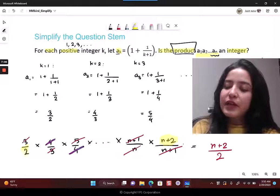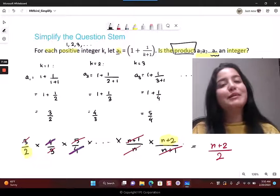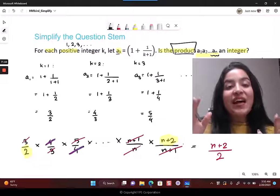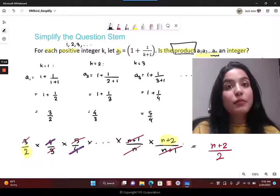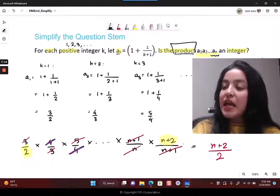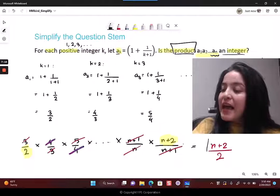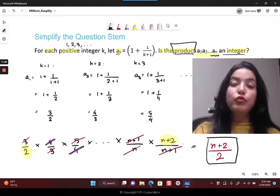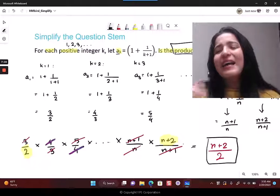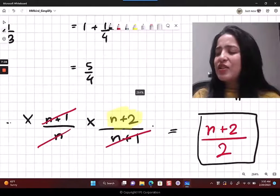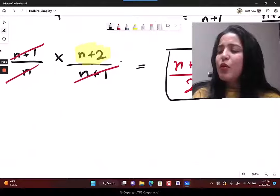This is the n plus 2 that ultimately remains in the numerator, and this is the 2 that ultimately remains in the denominator. Now this is my product. What's the question asking? Is the product an integer?